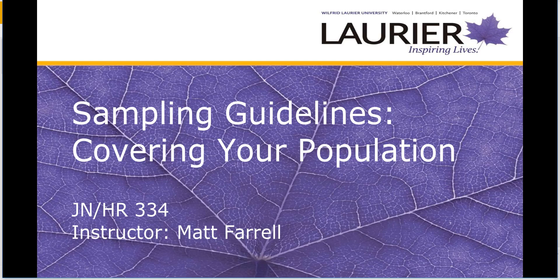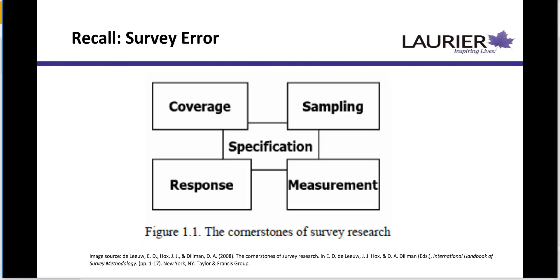In this video we're going to look at different sampling guidelines to make sure we're covering our population with our surveys. We have four primary types of survey error: coverage error, sampling error, response error, and measurement error. In a total survey error approach we want to minimize all of these. Our previous discussion of question order, wording, and design focused mainly on response error and measurement error. Now we're going to touch on principles that deal with coverage error and sampling error.